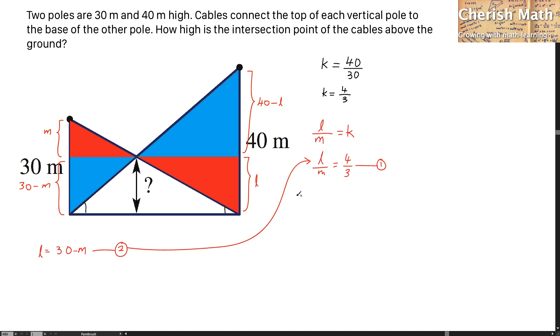And now I'm going to substitute into it. I'm going to do the cross multiplication here. That turns 90 minus 3M is equal to 4M. And the value of the M that I'm going to get is actually 90 over 7.